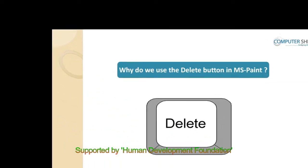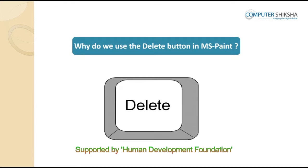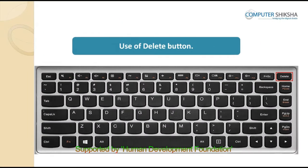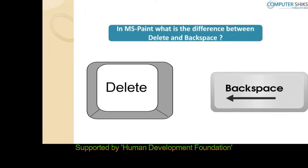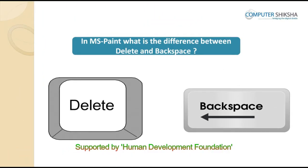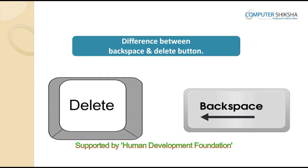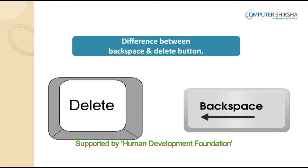Why do we use the Delete button in MS Paint? We use the Delete button to erase words on the right side of the cursor. In MS Paint, what is the difference between Delete and Backspace? By using Backspace, we can erase the word on the left side of the cursor, whereas with the Delete button, we can erase the word on the right side of the cursor.